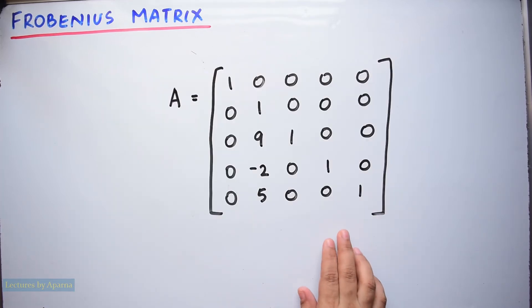So consider a 5 by 5 square matrix like this. Now let us see if this is a Frobenius matrix.